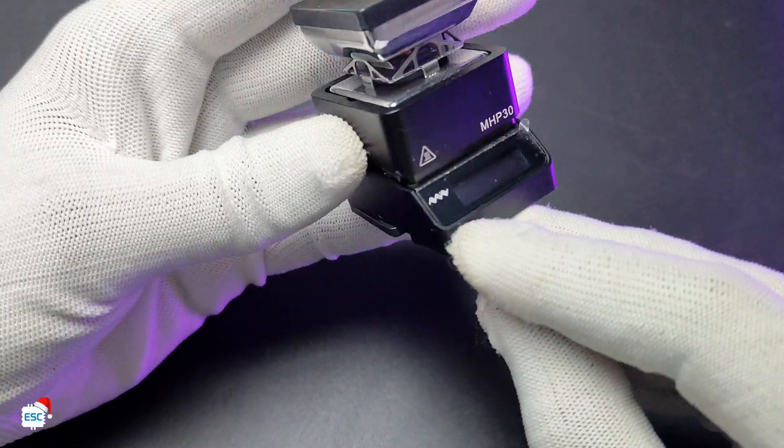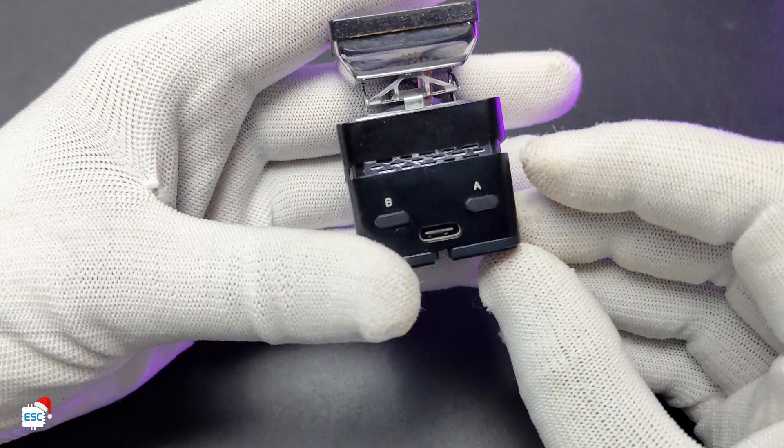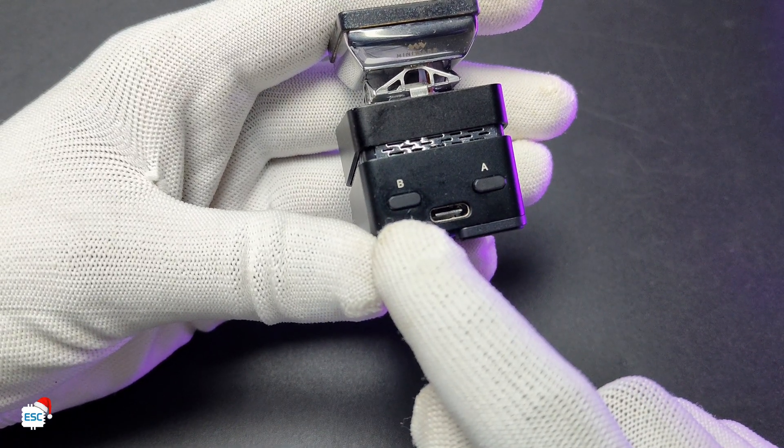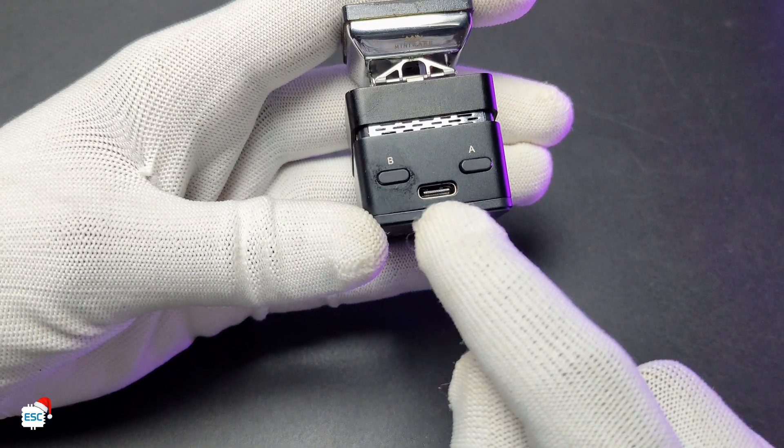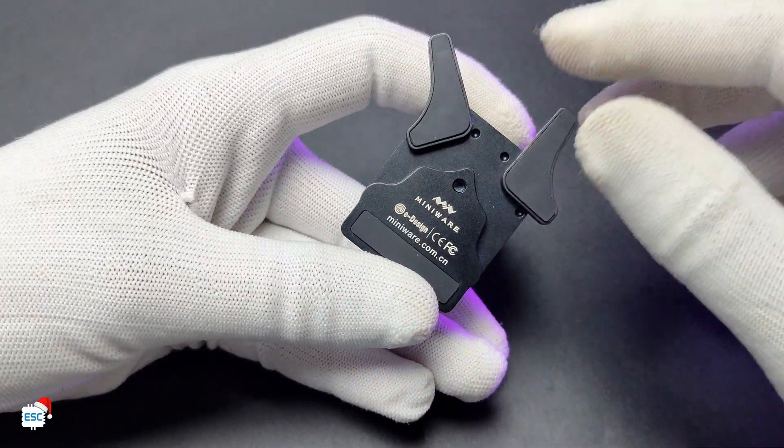On the front side there is a small OLED screen for displaying the temperature and other parameters. In the back side there are two physical switches marked as A and B for controlling the hotplate. Also there we can see the USB socket. On the bottom side there are two foldable legs for extra stability.